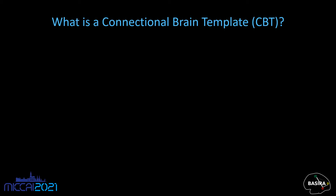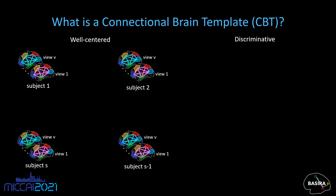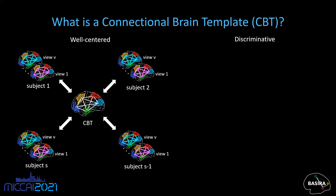Let's start with the Connectional Brain Template, in short CBT, and what it means. First, a CBT should satisfy two substantial criteria: well-centeredness and discriminativeness. Let us consider a subject in a brain network population. A subject has multiple morphological measures, namely fields, producing multiple graphs. Thereby, each subject is a multigraph, together forming a multigraph population. A CBT should be in the center of this population by minimizing the distances to each view of each subject.